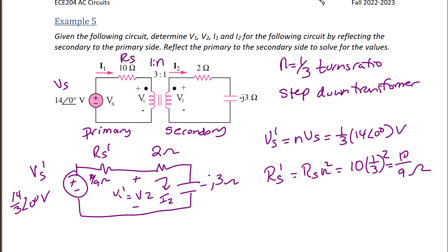We then put that on the circuit, and now we have one loop so we can solve for I2. 14 over 3 divided by 10 over 9 plus 2 minus J3 gives us the value for I2. So I2 is equal to 1.08 with an angle of 44 degrees, in amps.